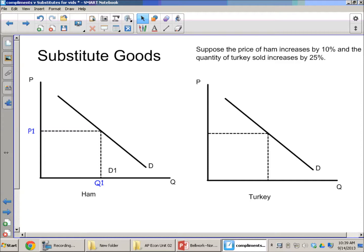Let's show that on the graph. So we have a price increase which, as you know, means that less ham is going to be sold. So the price has gone from P1 to P2, and the quantity has decreased from Q1 to Q2.